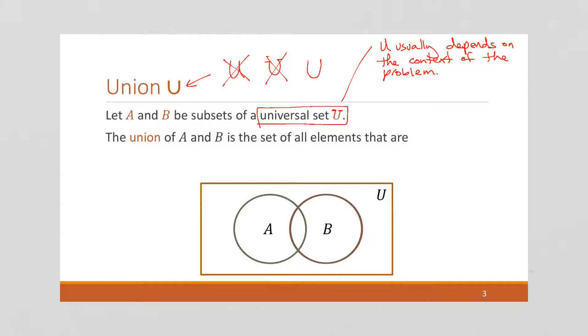So some problems will give it to you explicitly. But other times, if we're talking about how set A and B are both, A is the even integers and B is the set of all prime integers, for example. Well, sort of the background, right? The universal set behind it all, we're talking about the integers.